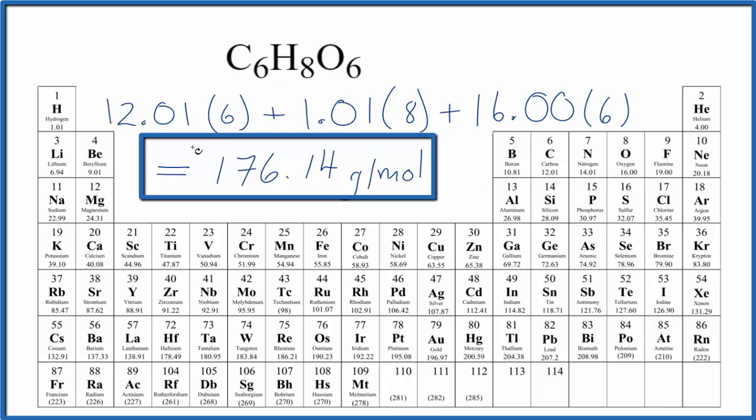My periodic table rounds to two decimal places. If your periodic table is different, you might get a slightly different answer. What this means is if we have one mole of C6H8O6, ascorbic acid, it'll have a mass of 176.14 grams.